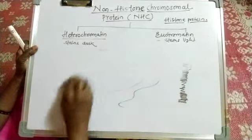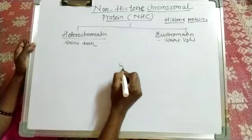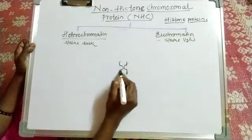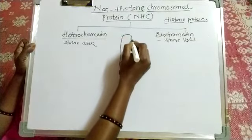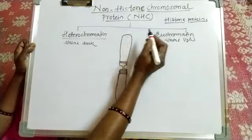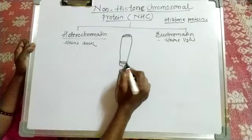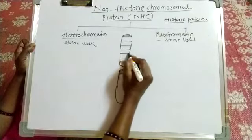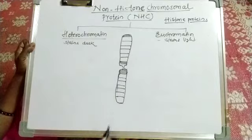So we can see that in the chromosome, the centromere portion is heterochromatic. We can see that the centromere is heterochromatic and that portion appears a little dark. In the chromosome, this is a heterochromatic region.